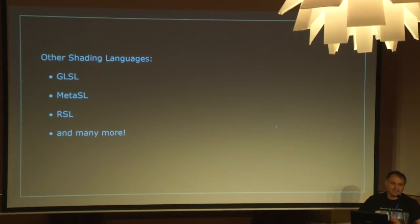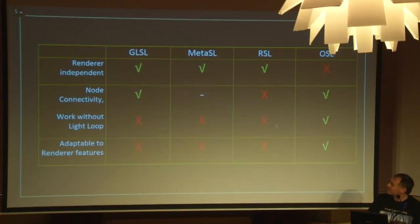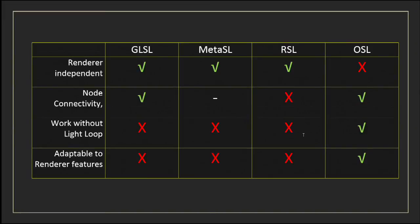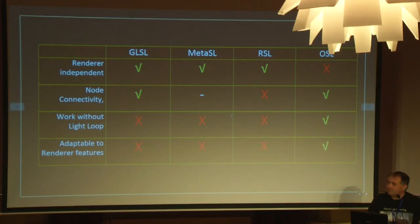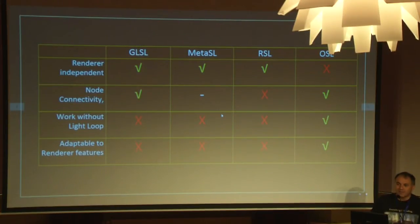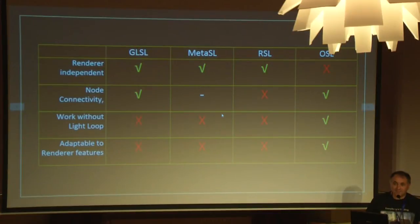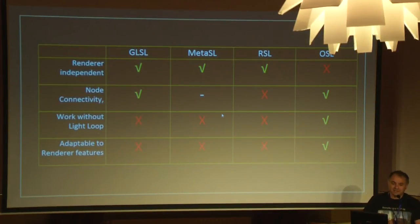What makes OSL so specific and so different from all these languages? OSL is the only one that works without a light loop. What does it mean? That you can control how the light is applied to your object with OSL, and you let the renderer do what it wants. That's the main interest of OSL — it's very specific to your renderer. So you get the most out of your renderer.